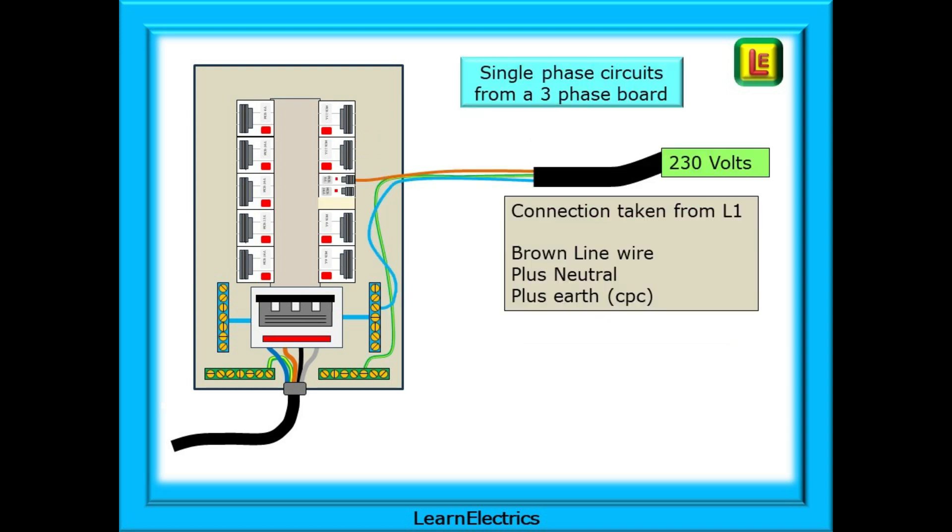We can also run single-phase 230 volt circuits. We will simply replace a three-phase breaker with single-phase breakers and connect a line to the breaker, a neutral wire to the neutral bar and an earth or CPC to the earth bar. It is not good working practice to run a single-phase circuit from a three-phase breaker. If it's a single-phase circuit, install a single-phase breaker.